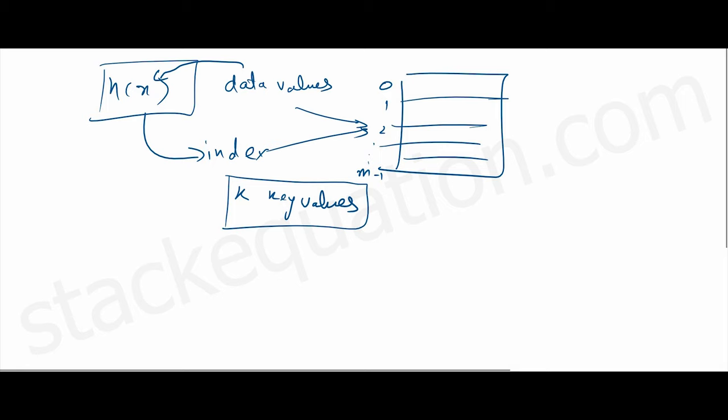The modulo hash function is k mod m, where m is the number of slots in the hash table, and k is the number of key values which we want to store in these slots.